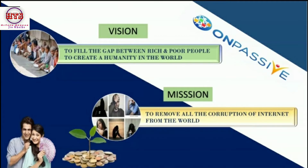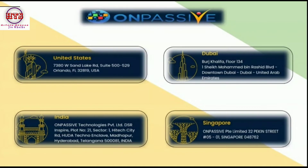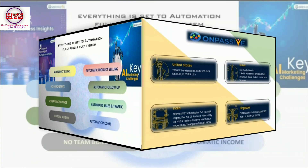The effort is to reduce the distance between the poor and the wealthy. The mission is to remove all corruption of the internet from the world. Unpassive's offices — as you all know — are in the United States, India (Hyderabad, where 1000 plus engineers are already working), Dubai, and Singapore. These are four locations so far, and in the coming days you will find Unpassive offices in every city.